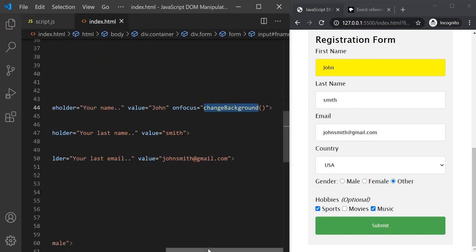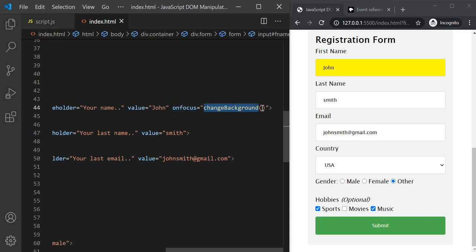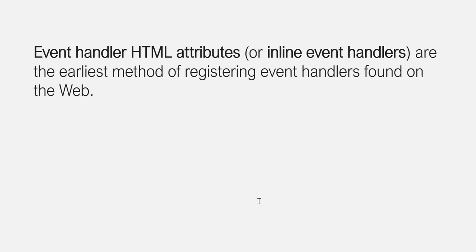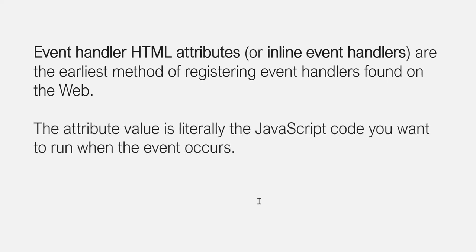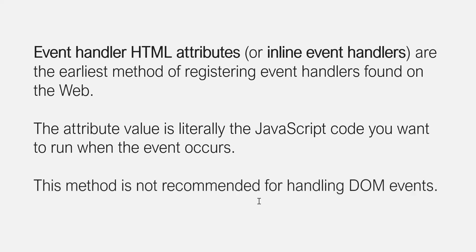In this way you can add event handler attributes to an element — the attribute name should be the event name prefixed with 'on', and you can assign any JavaScript expression to it. The event handler HTML attributes, also called inline event handlers, are the earliest method of registering event handlers found on the web. The attribute value is the JavaScript code you want to run when the event occurs. However, this method for handling DOM events is not recommended. In the next couple of lectures we will talk about the recommended ways of handling events in JavaScript.